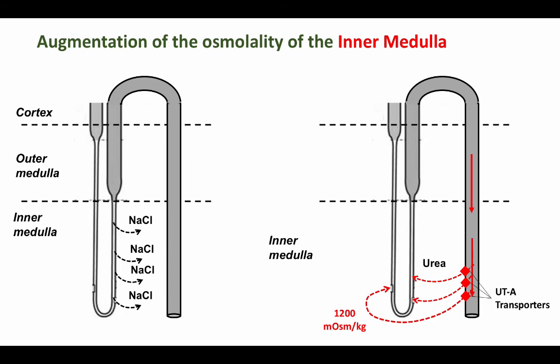Yet under high concentrating conditions, osmolality continues to increase in the inner medulla up to high values of around 1000 milliosmoles. The mechanisms for this increase in osmolality remain controversial. Currently two theories are in favour, both dependent on passive transport of solutes, quite unlike the active transport in the thick ascending limb.